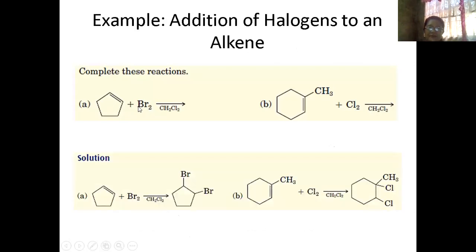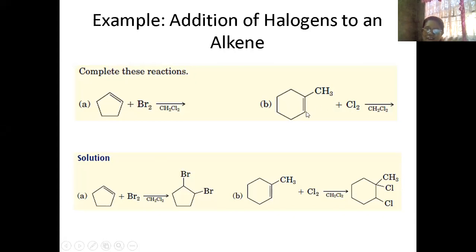For example: you always have the reagent dichloromethane. If bromine is added, one bromine attaches here and another bromine attaches there. For chlorine: one chlorine attaches and another chlorine attaches. That is the addition of halogens — chlorine or bromine — to the double bond.